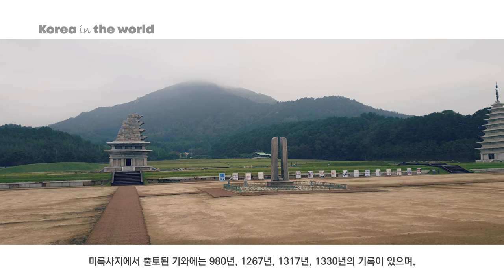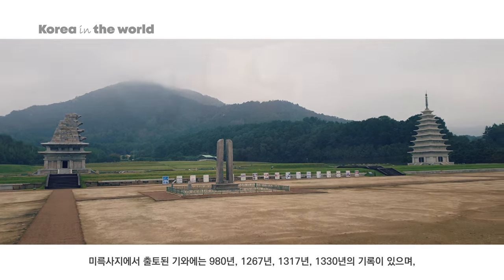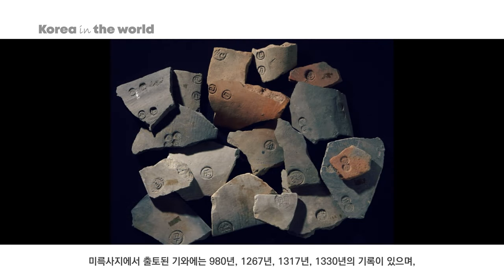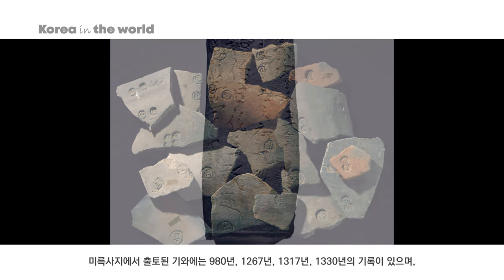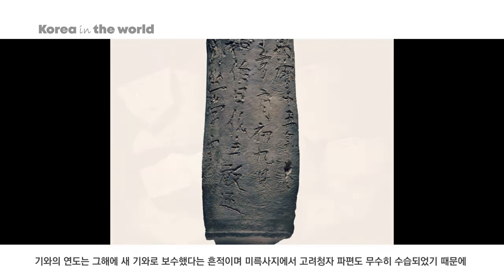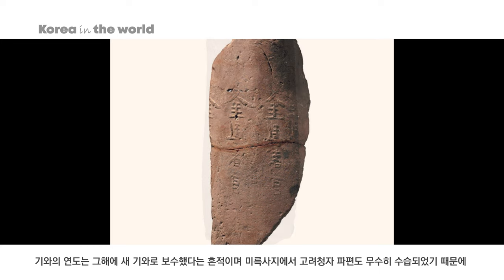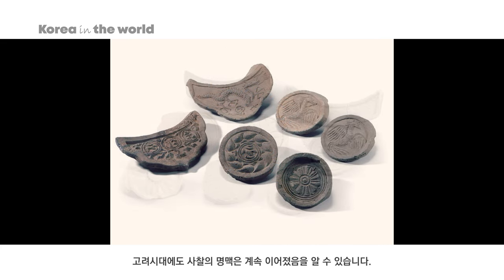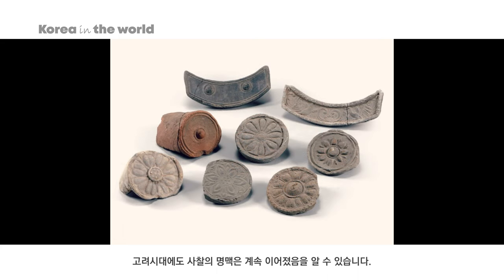미륵사지에서 출토된 기와에는 980년, 1267년, 1317년, 1330년의 기록이 있으며 기와의 연도는 그 해에 새 기와로 보수했다는 흔적이며, 미륵사지에서 고려청자 파편도 무수히 수습되었기 때문에 고려시대에도 사찰의 명맥은 계속 이어졌음을 알 수 있습니다.